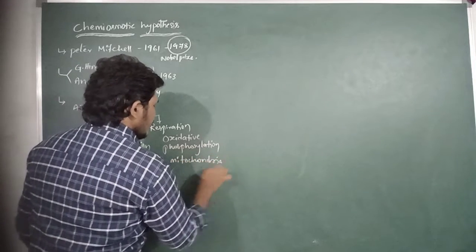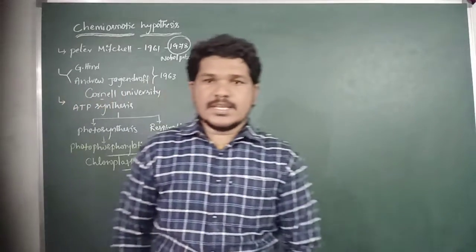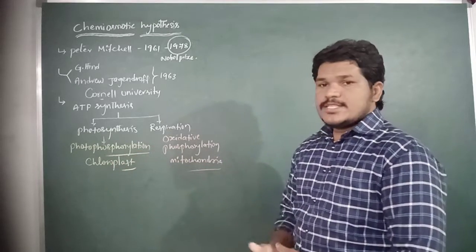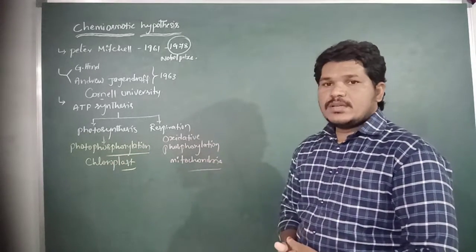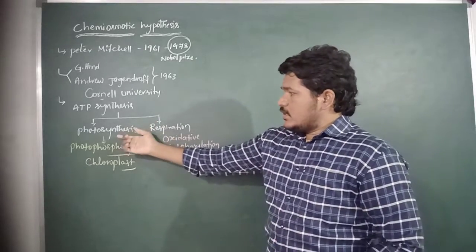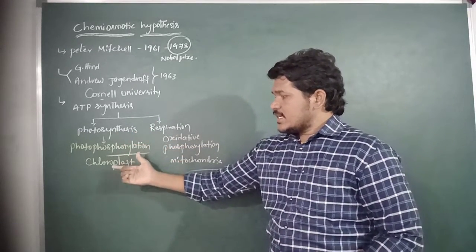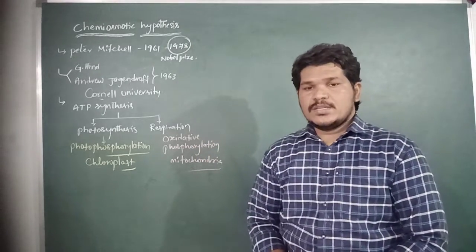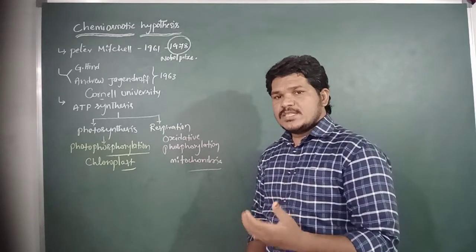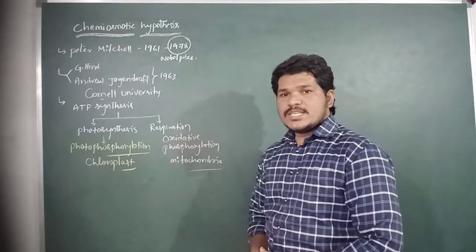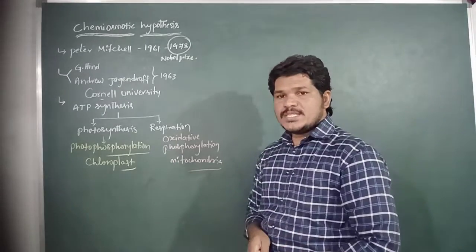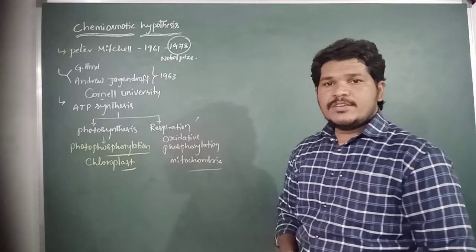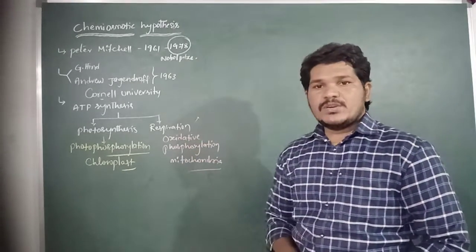During the respiration process, ATP is synthesized by oxidative phosphorylation, which occurs in the mitochondria. So photophosphorylation occurs in the chloroplast and oxidative phosphorylation occurs in the mitochondria — both semi-autonomous cellular organelles.